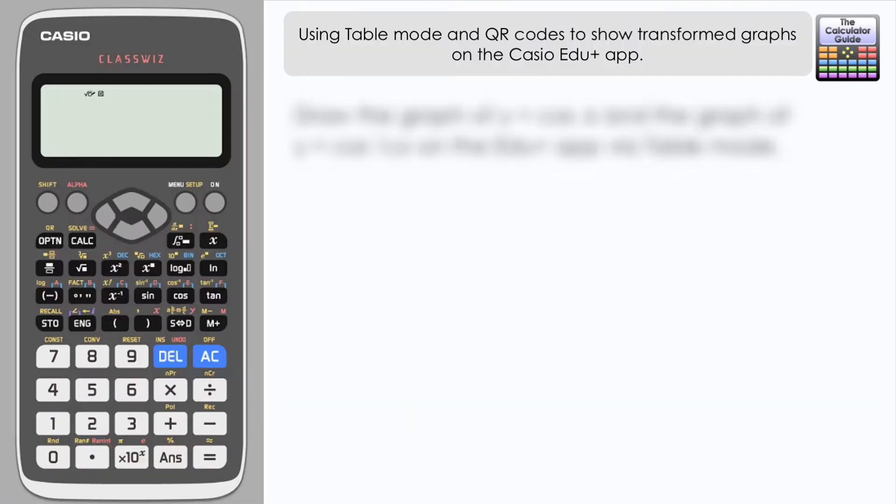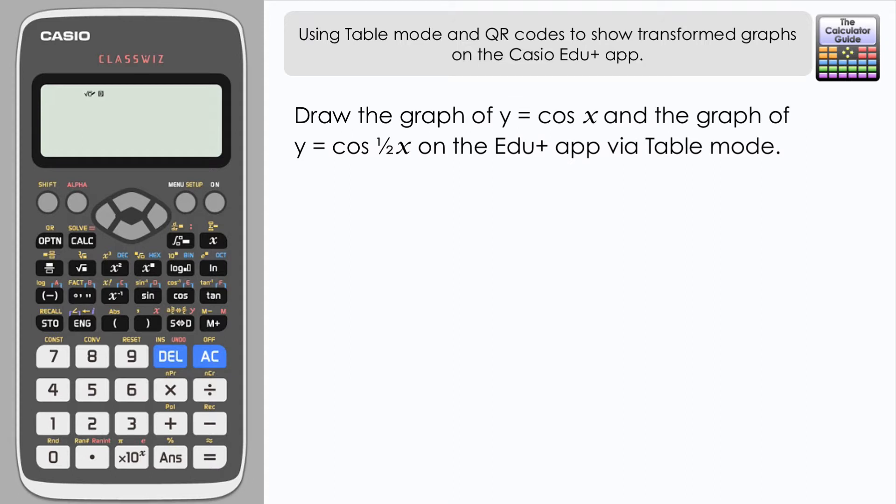In this video we're going to look at using table mode and the QR code feature on the ClassWiz to show transformed graphs on the Casio Edu+ app. We're going to draw the graph of y equals cosine x and the graph of y equals cosine of a half x on the Edu+ app via the table mode.